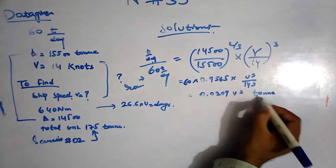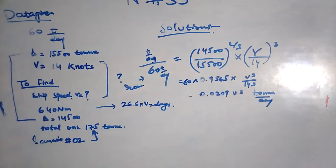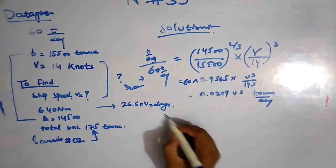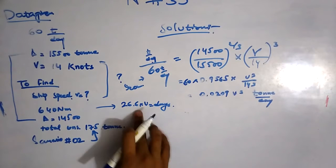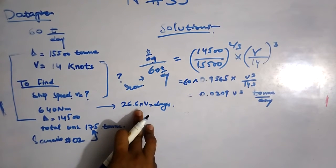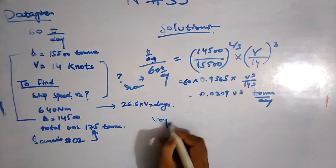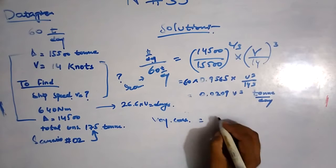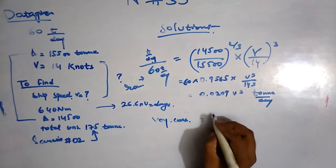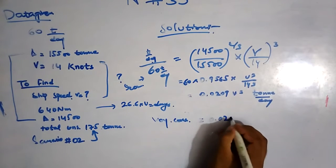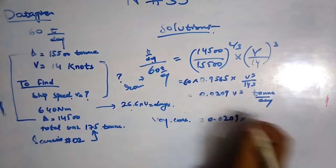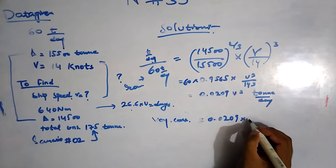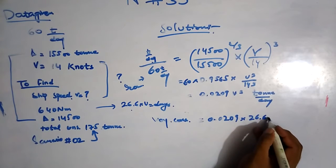For the number of days, I have already found it. So consumption is equal to this tonnage 0.0209 multiplied by 26.6 into V.